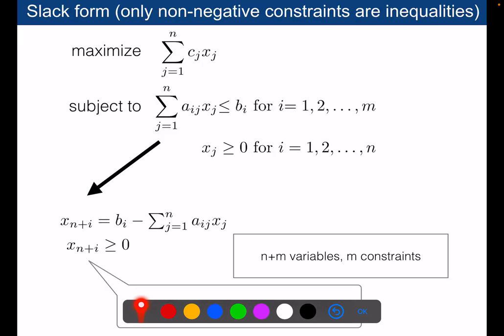Another form is what we call the slack form. This is one step further in the transformation. It's a form in which you only have non-negative constraints that are inequalities, but all the other constraints should be equality constraints.